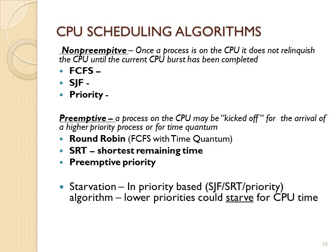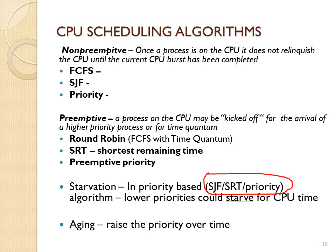Starvation can happen in any priority-based algorithm, and four of these six algorithms are priority-based. Shortest-job-first is priority-based on CPU burst time — those with shorter CPU bursts go to the front of the queue. Priority-based algorithms put those with higher priority at the front, and this also applies to shortest remaining time and preemptive priority. Aging is a technique that raises a process's priority over time in order to combat starvation.